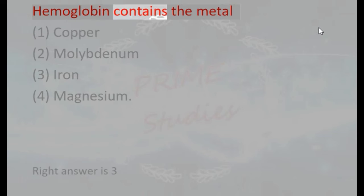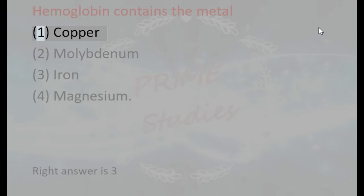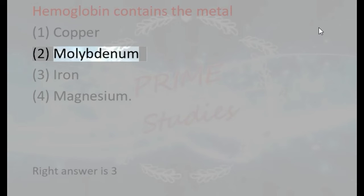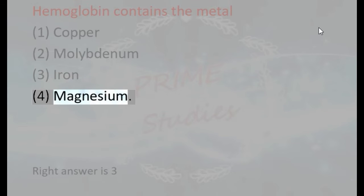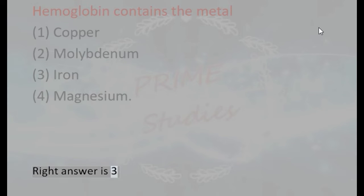Hemoglobin contains the metal: 1. Copper, 2. Molybdenum, 3. Iron, 4. Magnesium. Right answer is 3.